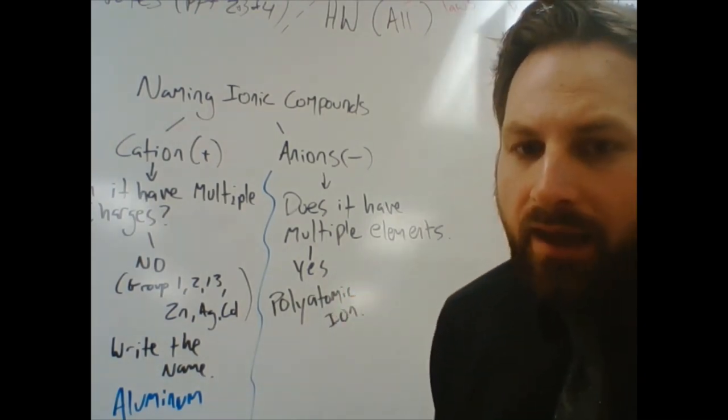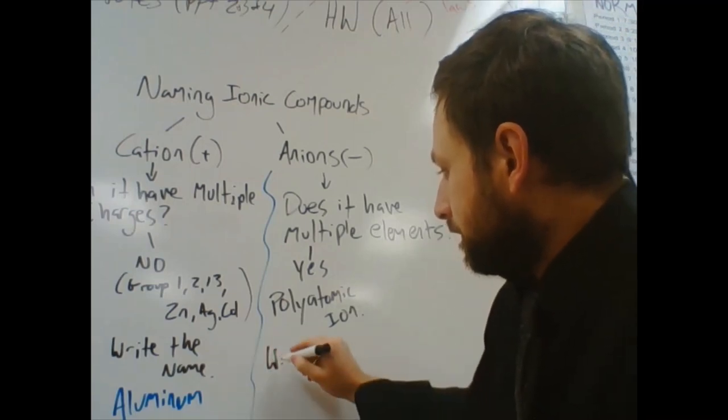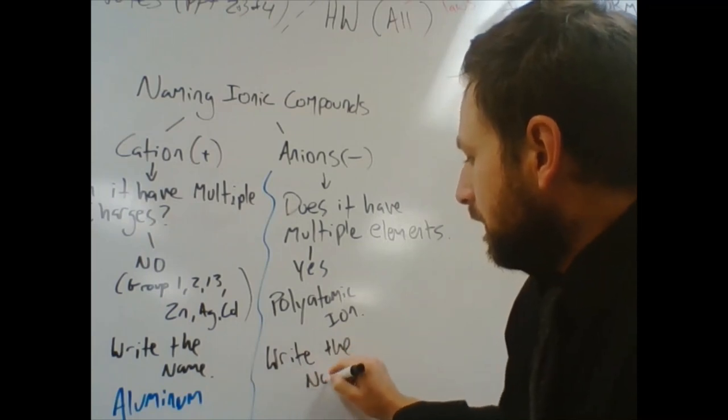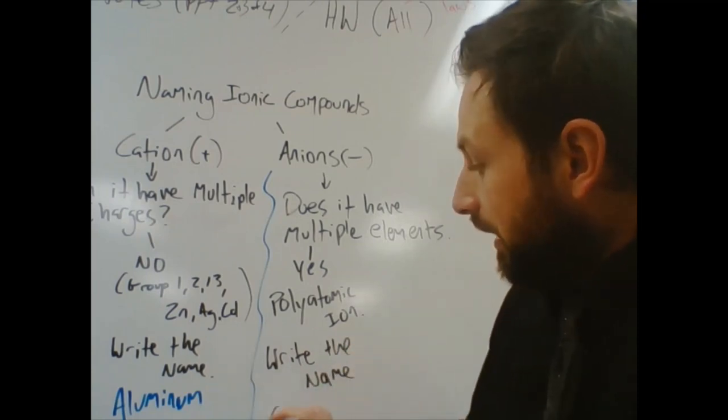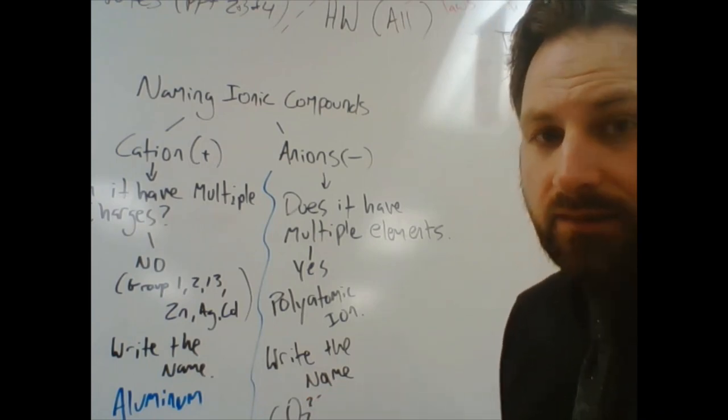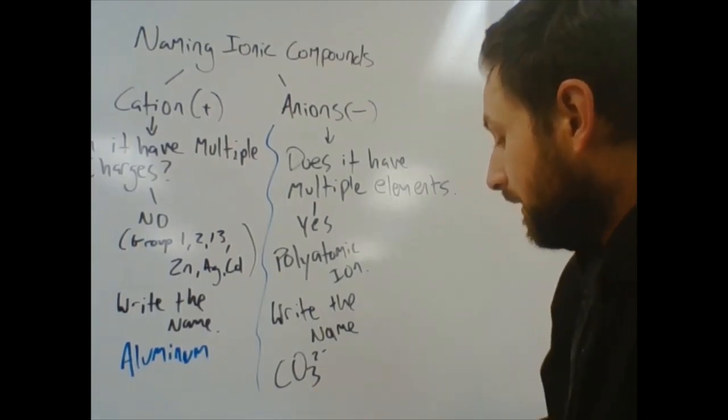If you have a polyatomic ion, all you do is you write the name. For example, CO3 2 minus is carbonate. So, you would just write carbonate.